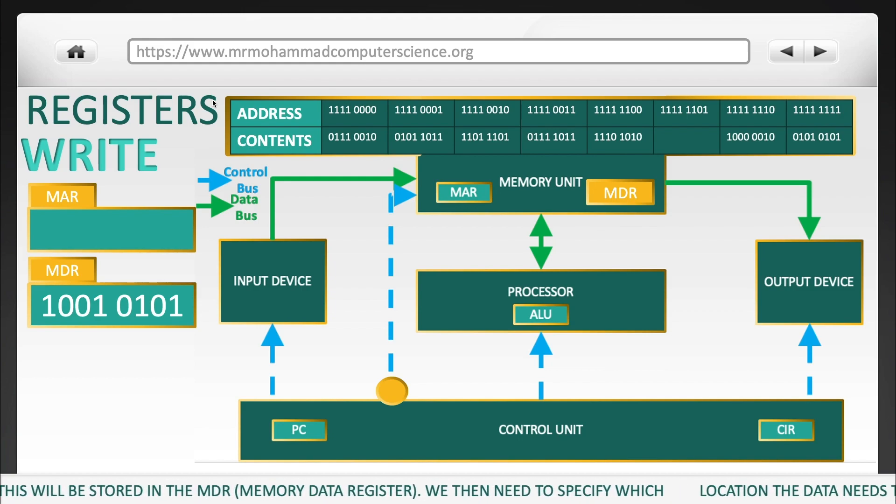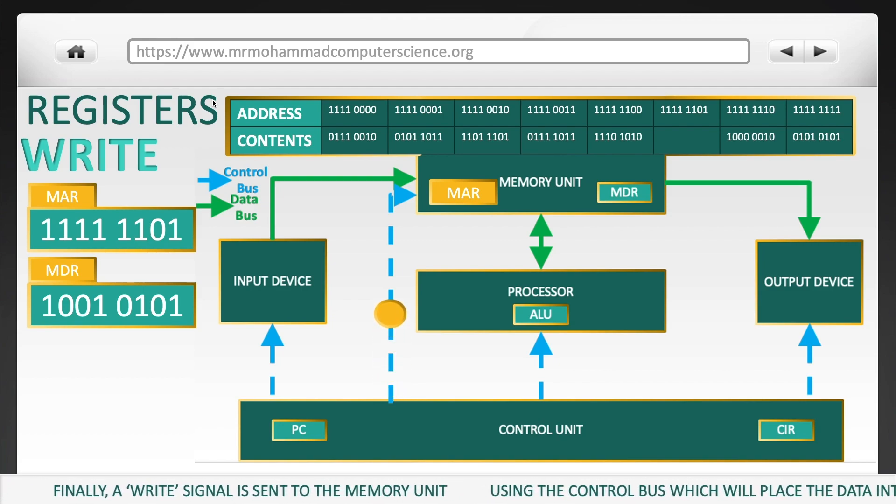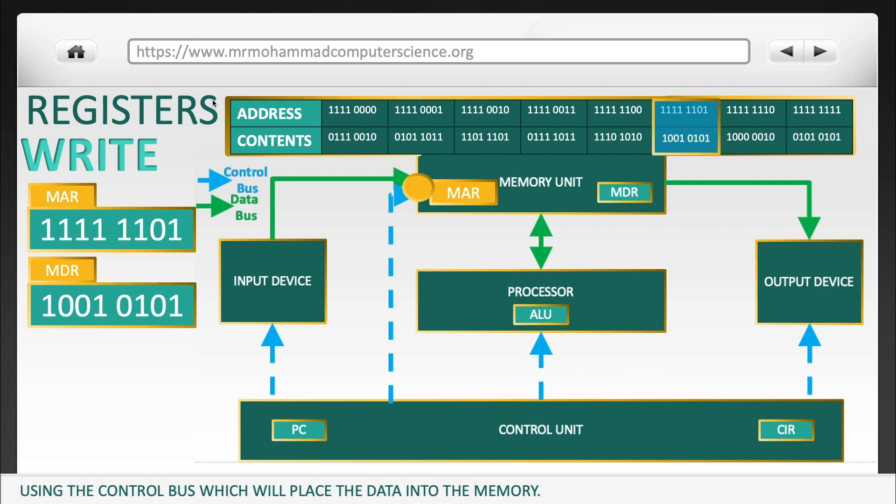We then need to specify which location the data is stored in. I'm going to choose the location 11111101. So that's going to be entered into the MAR. Finally, a WRITE signal is sent to the memory unit using the control bus, which will take the data into memory.